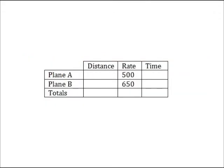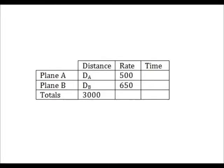We can put the rate values into the table because these are given to us. How can we relate the total trip distance to the individual distances? We know the distance between the two cities is 3,000 miles. The planes are going to meet somewhere between these two cities.